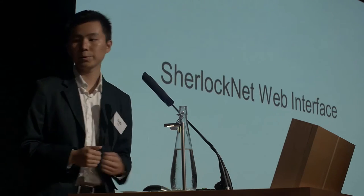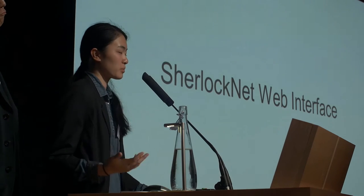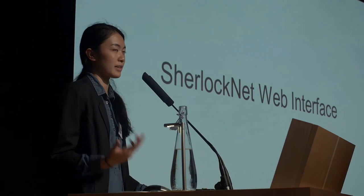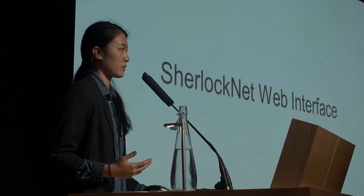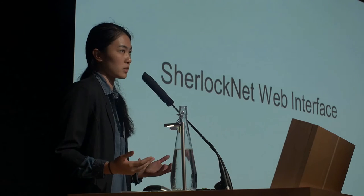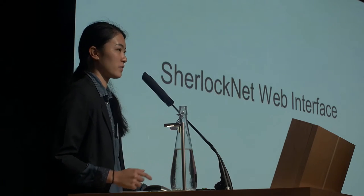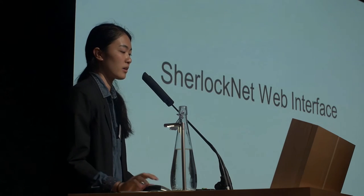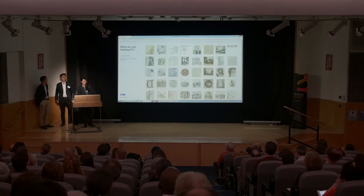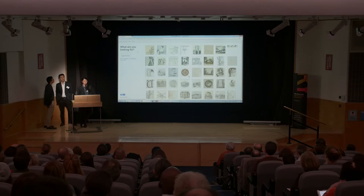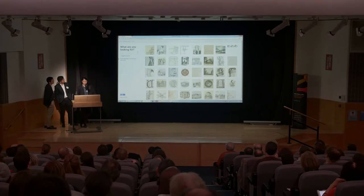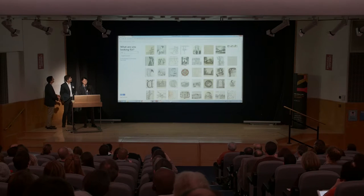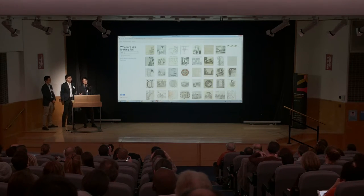I'll turn it over to Karen to talk about the interface. All of the OCR and category tags are actually uploaded on Flickr right now, so you can go check that out. We also decided to showcase some of our other project features, including the related images and the captions, with our own web interface built on top of the Flickr API. Let's explore SherlockNet. This is the main page — it shows a random selection of images from the Flickr Commons.